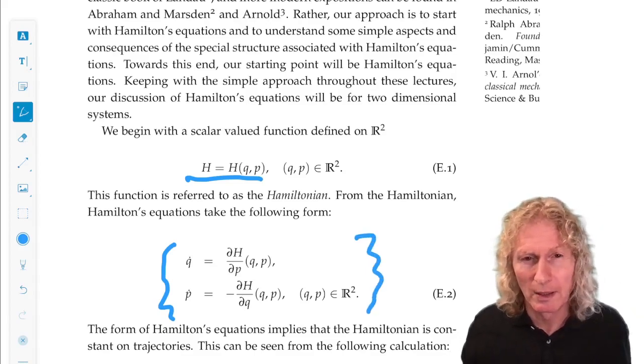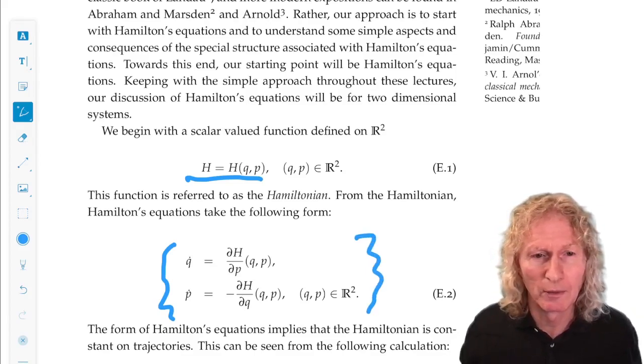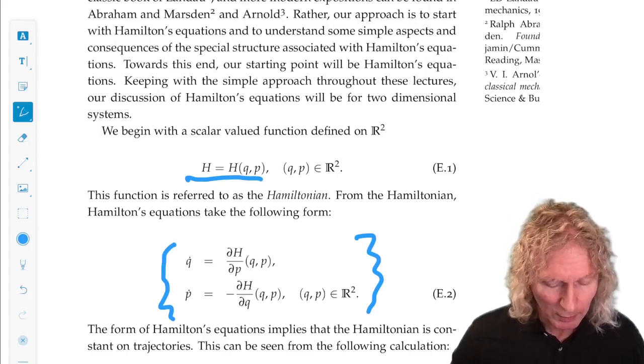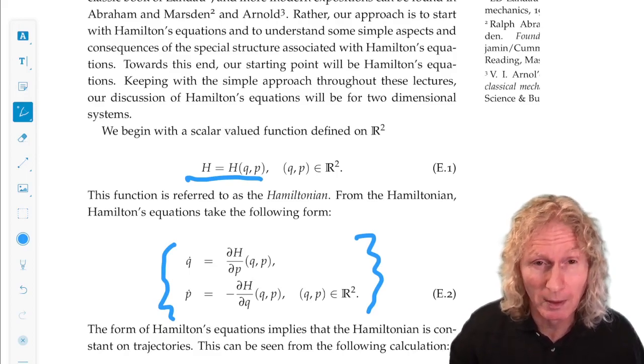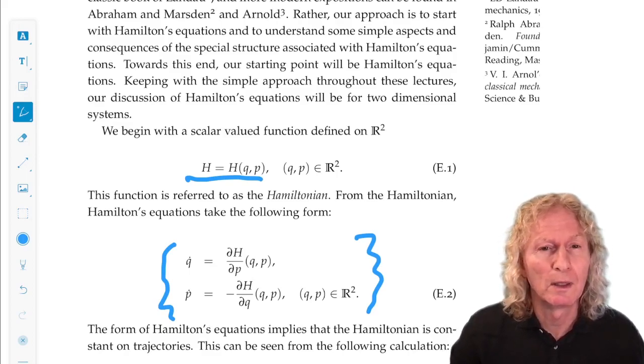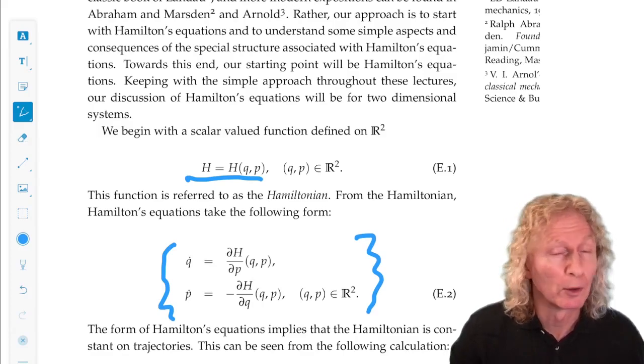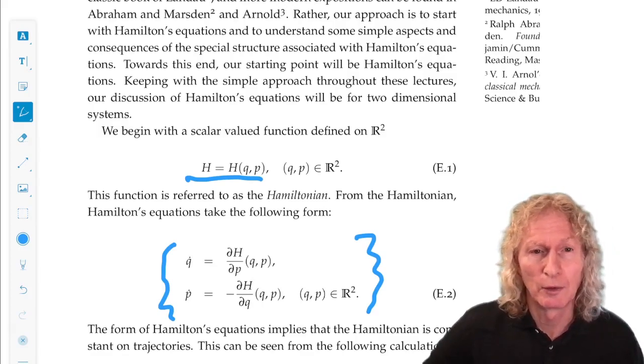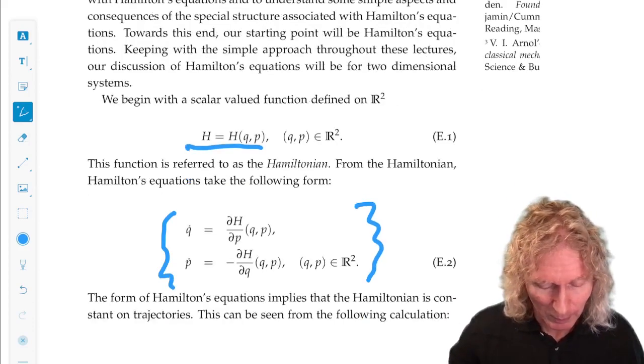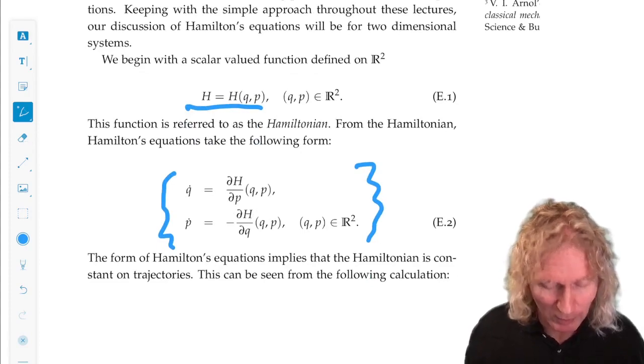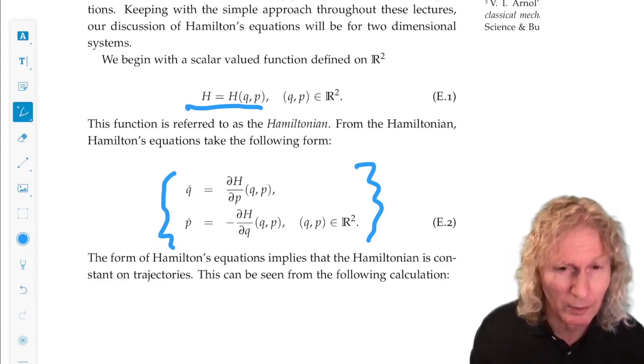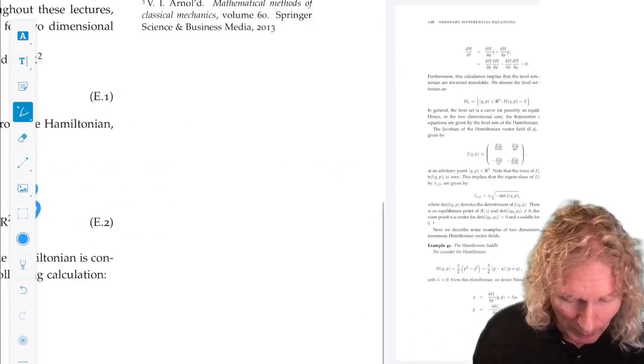These generalize to higher dimensions in a very natural way. Q and P are often, in applications, the configuration space or position variable, and P is the associated or conjugate momenta. This is a big, fascinating subject, but I just want to talk about some of the basics here so that you've seen them once and hopefully you'll see them again.